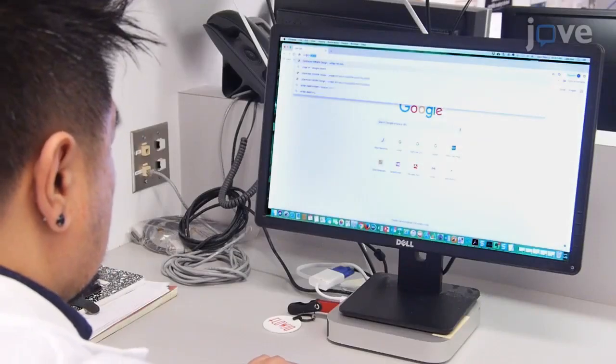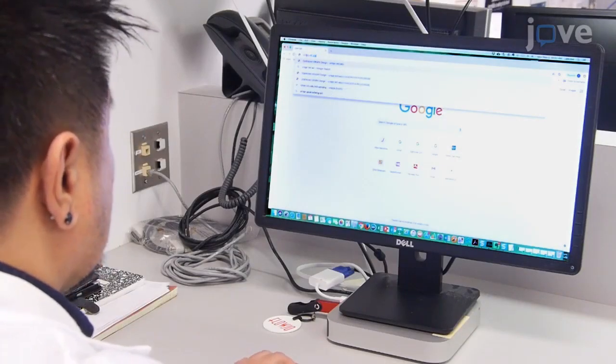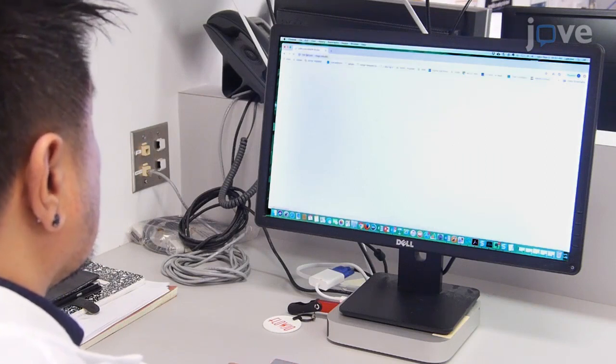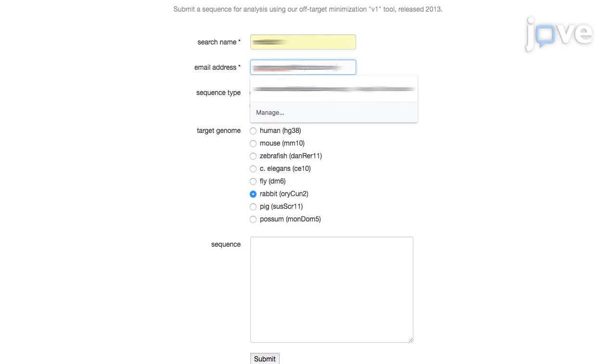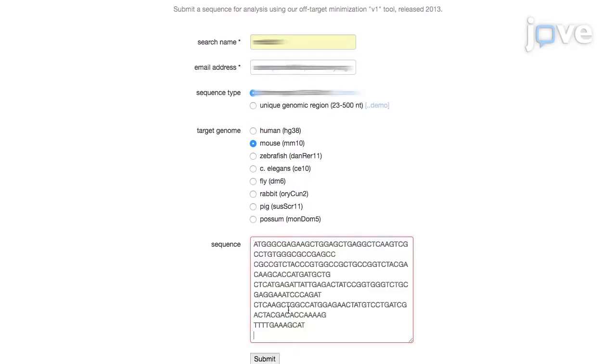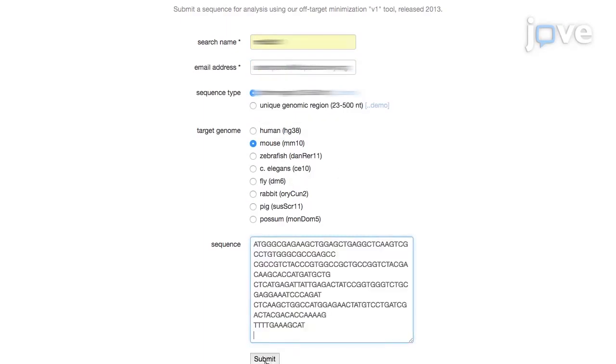A web-based CRISPR design software is used to design 4-6 single-guide RNAs for the gene of interest. To begin, fill in the appropriate information in the fields with asterisks. Then select the target genome for single-guide RNA design, paste the target sequence in the sequence box, and click on the submit button.